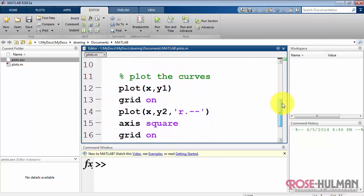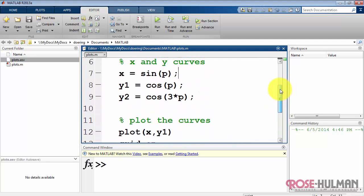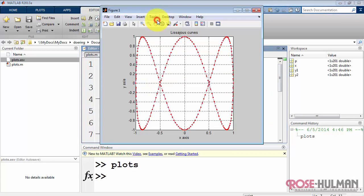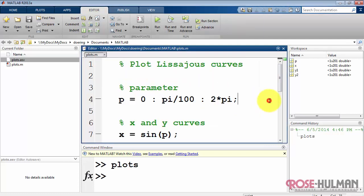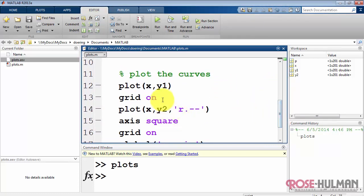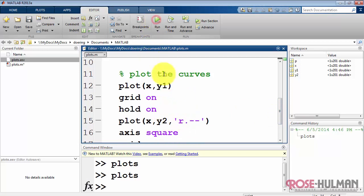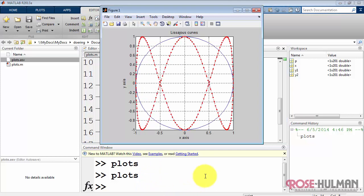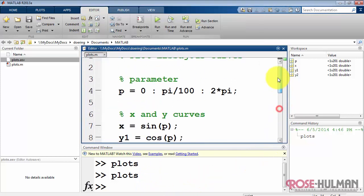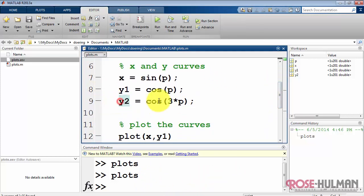I have an existing script called plots and this generates two lisajou curves in the same figure window. Let me illustrate the over plotting technique. Again, this is a single plot with two curves overlaid.